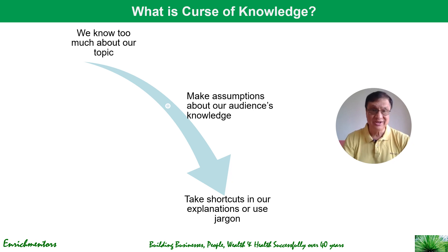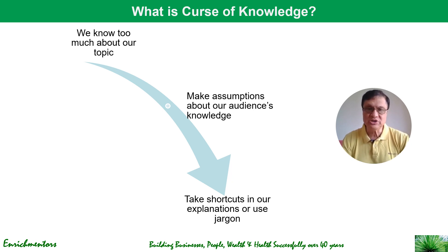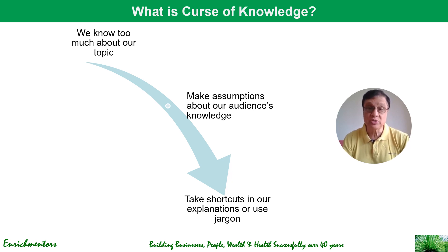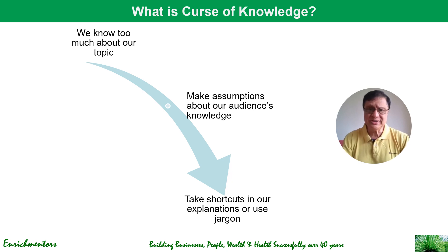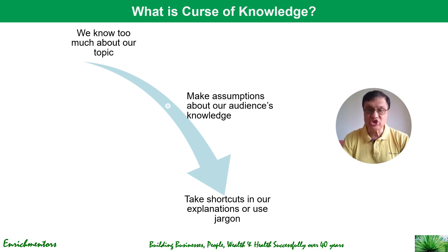We have great knowledge about the topic, and this can happen with scientists, this can happen with experts. As a result of knowing too much, we assume the audience's knowledge to be at a significantly higher level than what it could be. It's a good chance that you have significantly better knowledge, and you make assumptions about your knowledge being simpler — and as a result of that assumption, you take shortcuts in your explanation and use jargon.